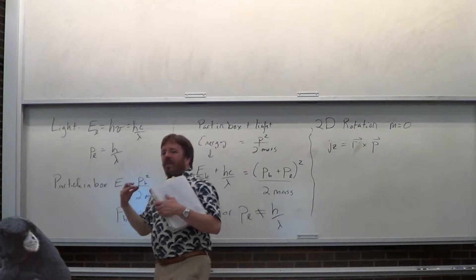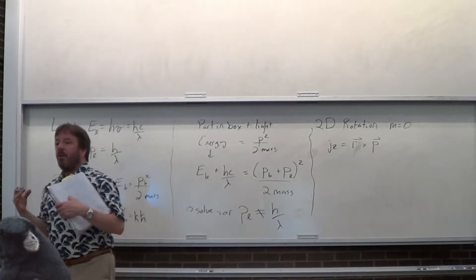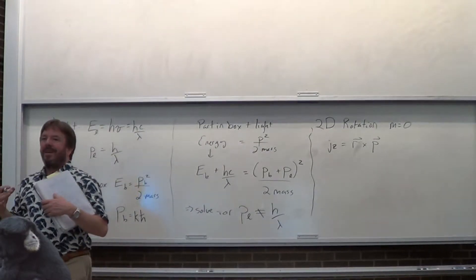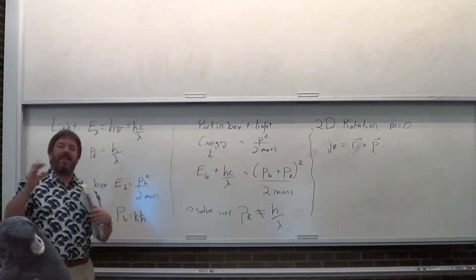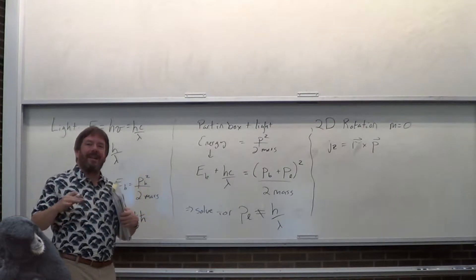That is the definition of angular momentum: J = r cross p — we had that in mechanics class.